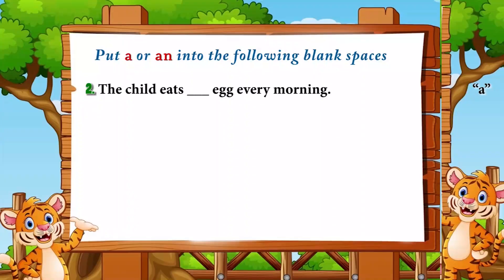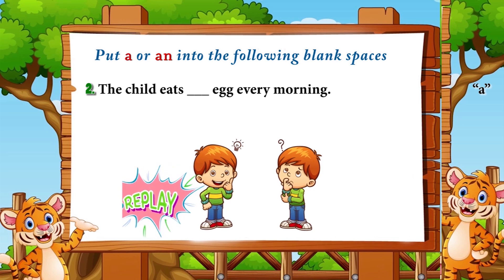Number two: 'The child eats ___ egg every morning.' The answer is 'an' — 'the child eats an egg every morning' — because 'egg' begins with the vowel sound 'e.'